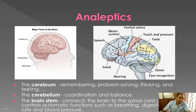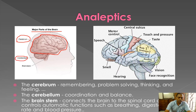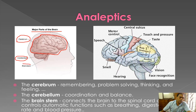Coming to the brain, it contains mainly three major parts. One is the cerebrum, which is the largest part of the brain. The next is the cerebellum, which is the smaller part and lies just underneath the cerebrum. And then we have the brain stem, which originates from underneath the cerebrum and continues as the spinal cord.